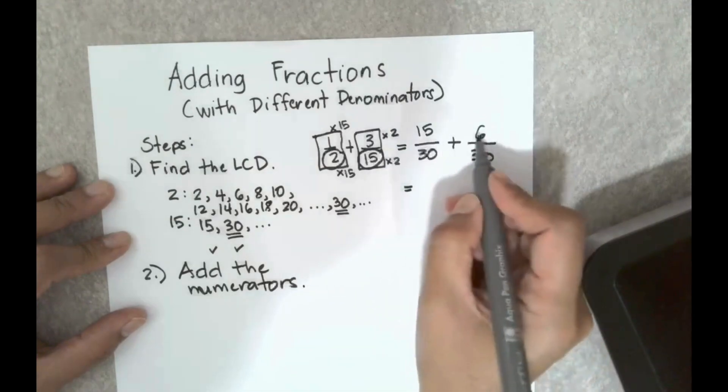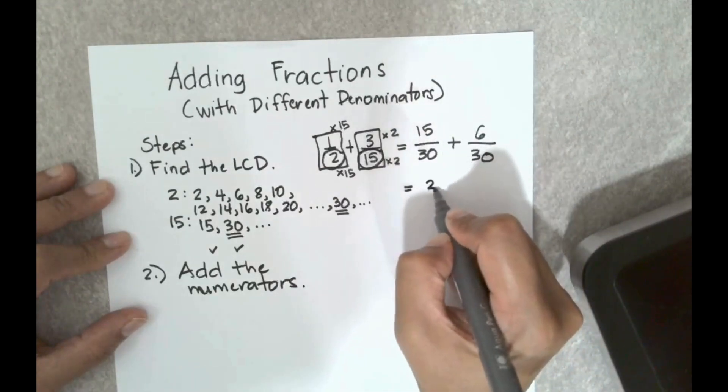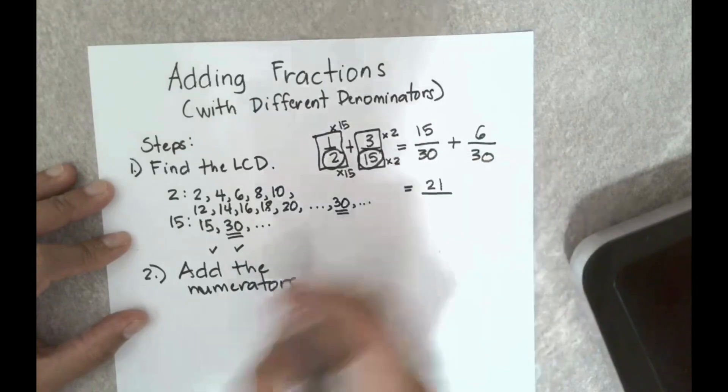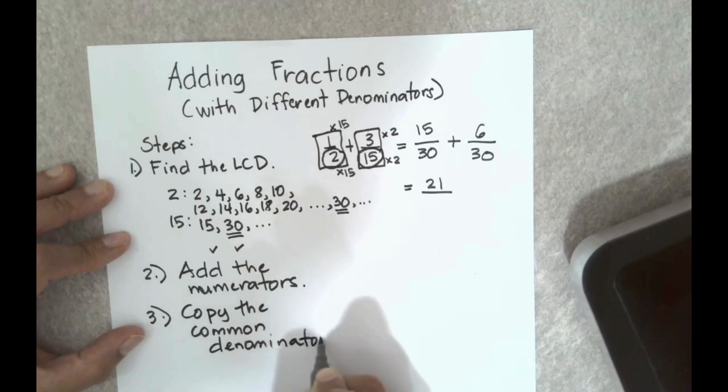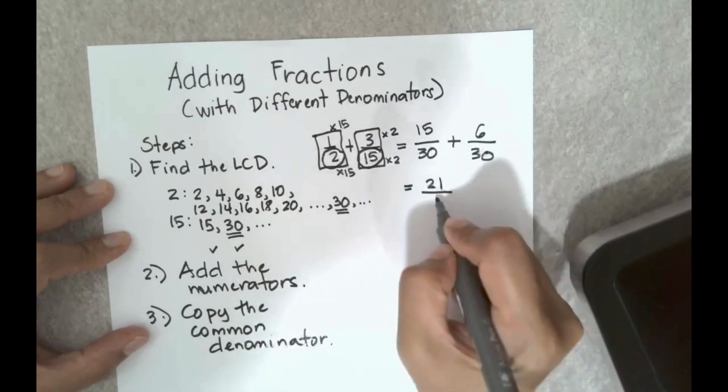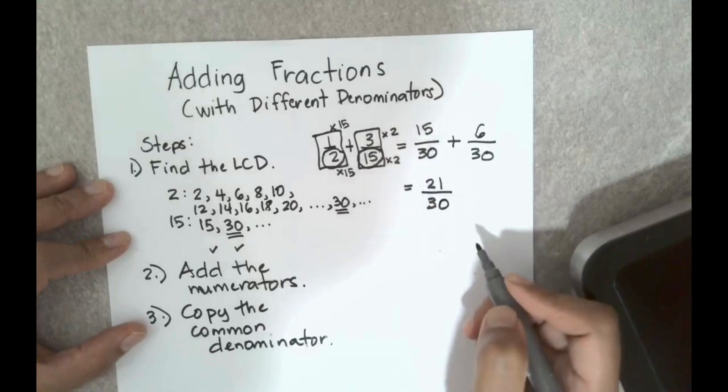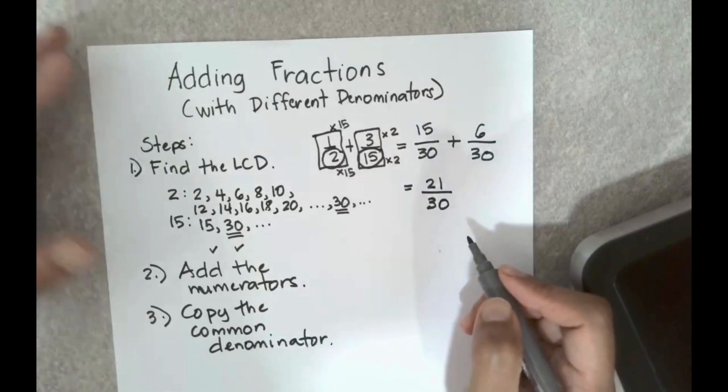So I have 15 plus 6, that's going to be equal to 21. And then copy the common denominator. So the common denominator is 30, so I'm just going to copy that.